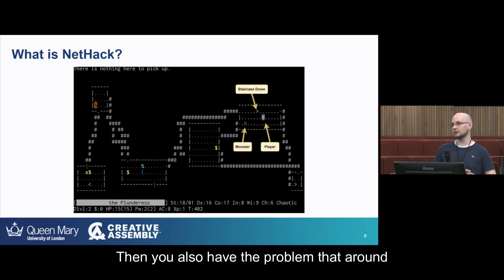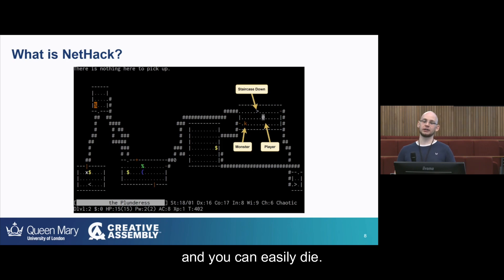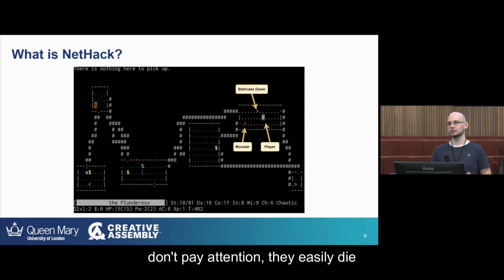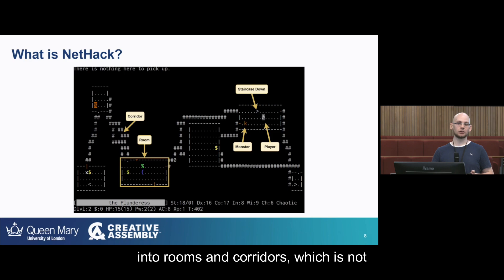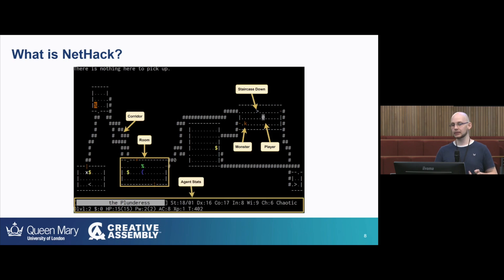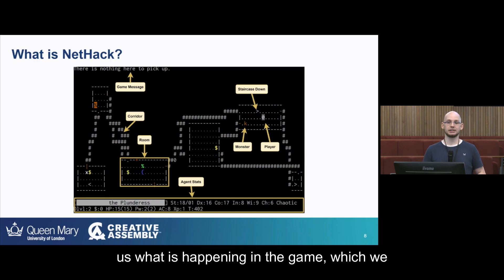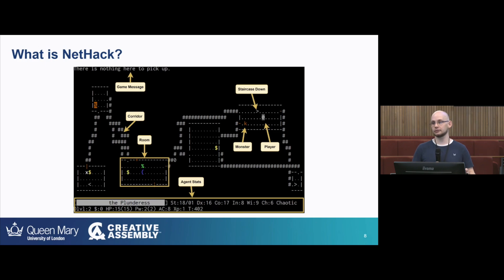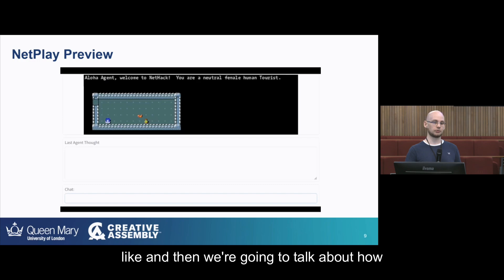There are around 50 levels in this game which you have to beat to get to the final level, then get back up and do more. You can easily die — even experienced players, if they don't pay attention, easily die and lose the game. The map is split into rooms and corridors. The game also generates messages that tell us what is happening, which we can use to provide feedback to our large language model. So here is NetPlay — I'm going to show you how it looks and then talk about how it works.